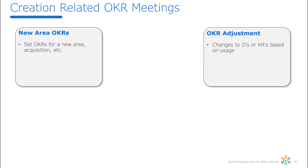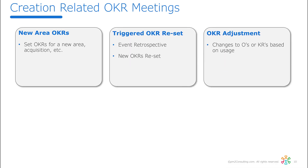The second creation category is triggered OKR resets. These occur when a particular performance level has triggered the need to reset OKRs — for example, if sales are below or above a certain level. In that situation, we might have almost a mini quarter-end review: a retrospective of what the event was, followed by a reset for new OKRs.